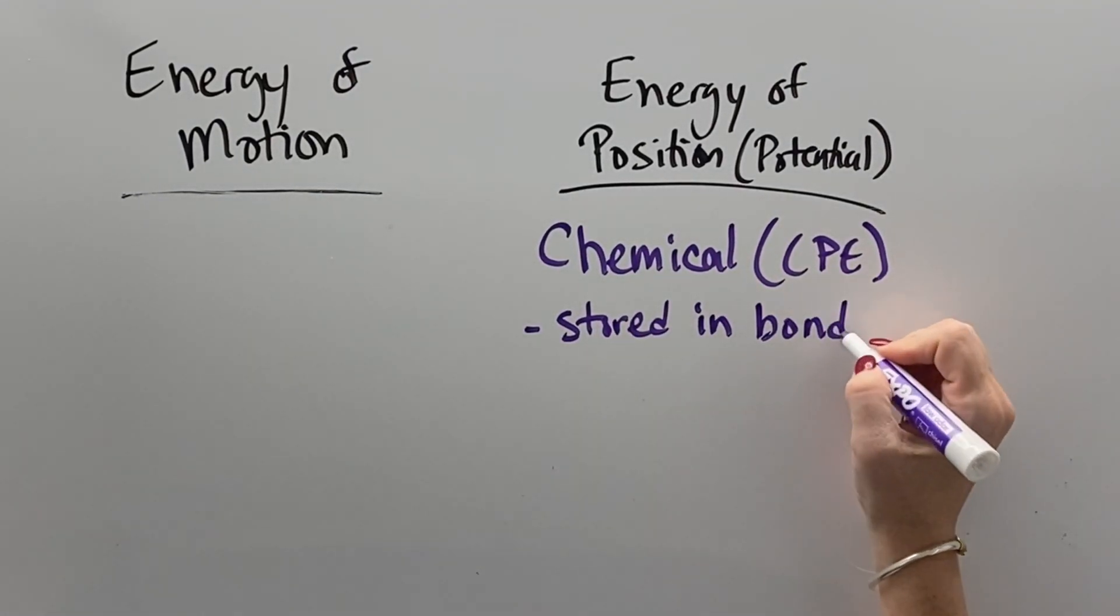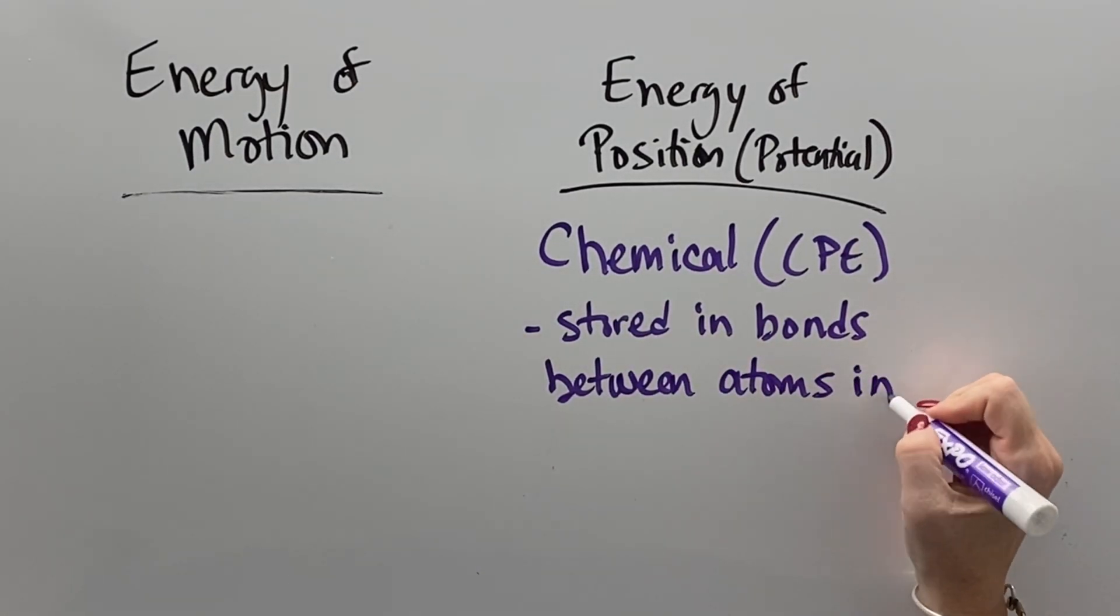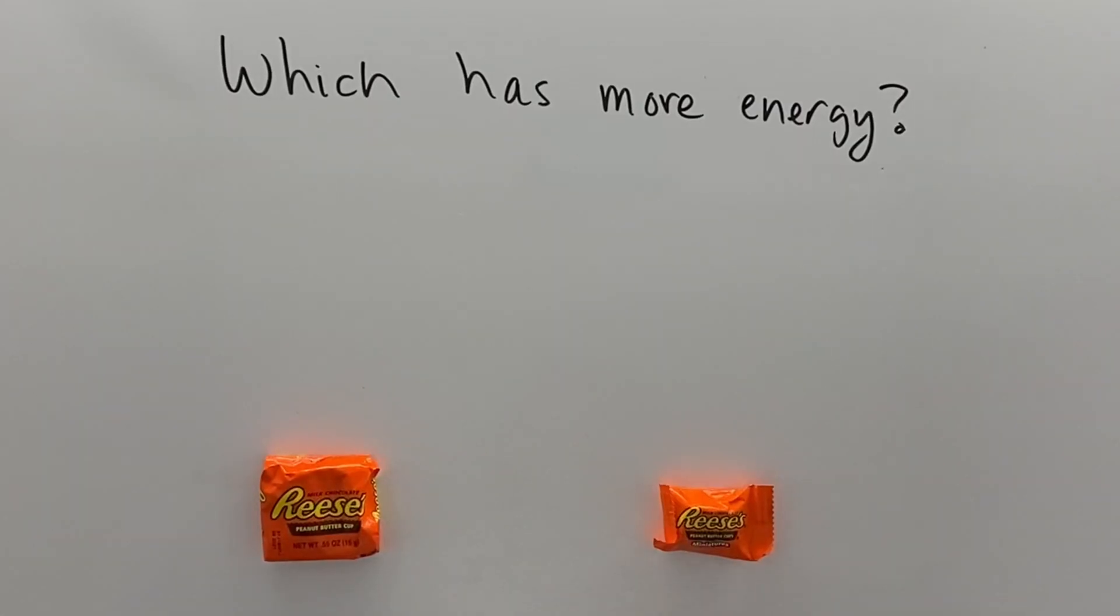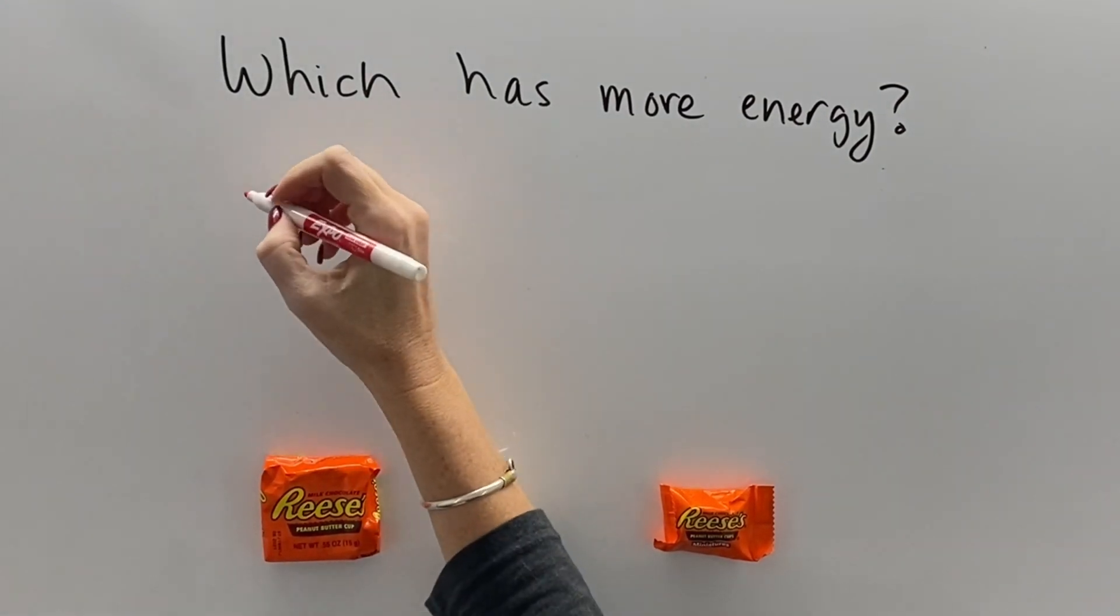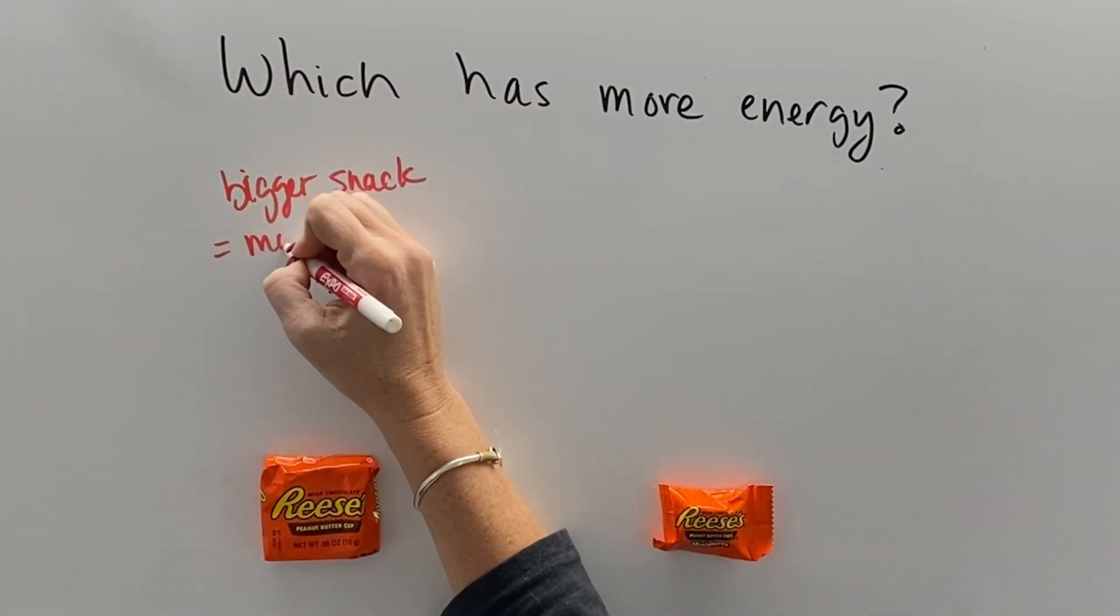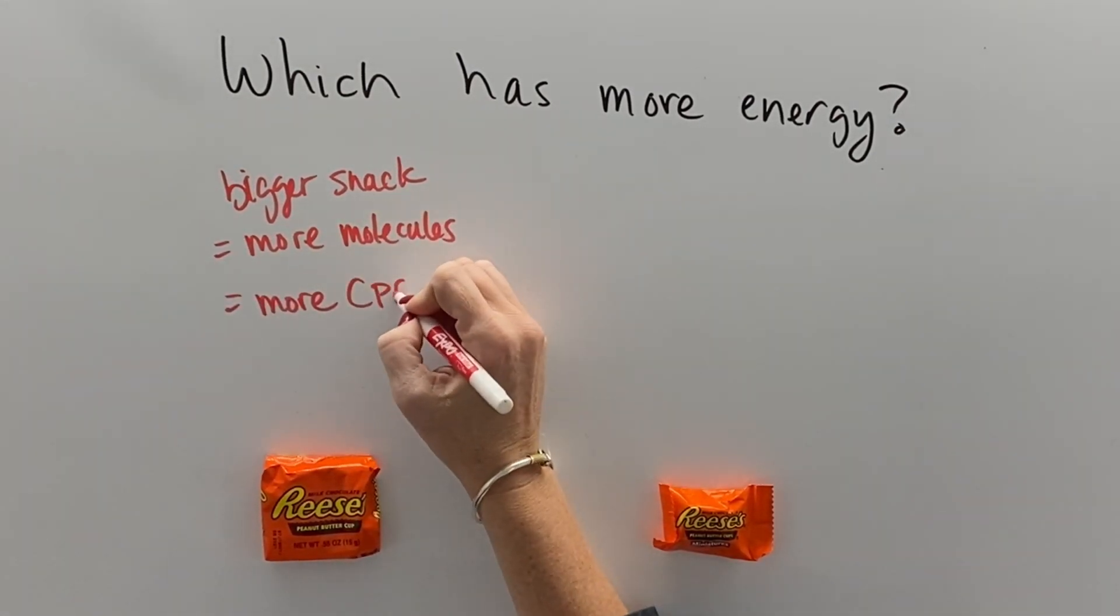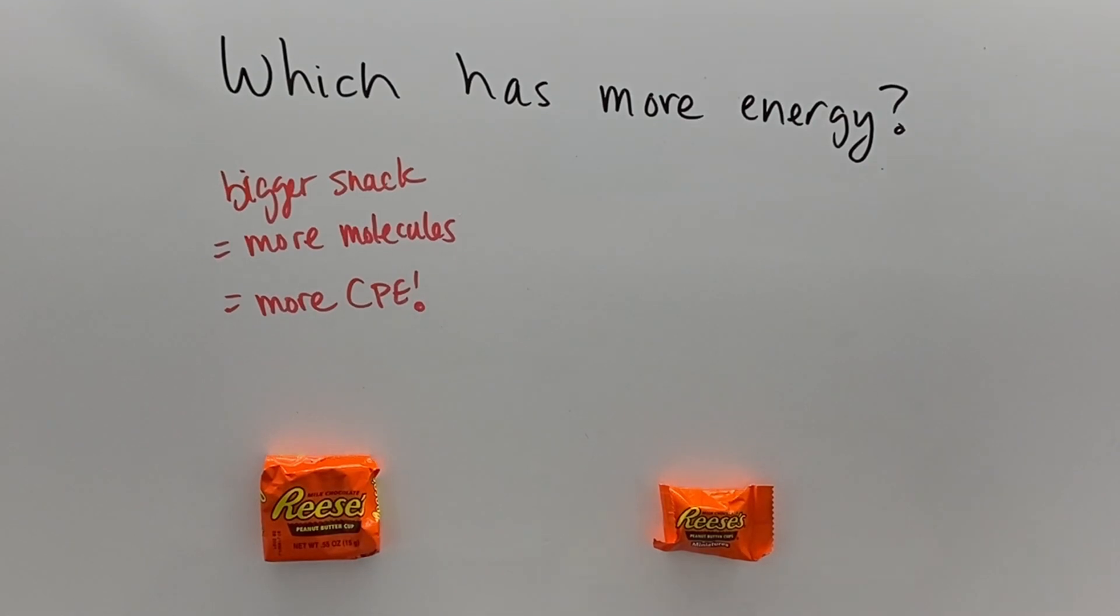Chemical potential energy is stored just in the fact that molecules have bonds that can be broken, and when you break the bonds between atoms in molecules, then they release energy. And so a large concentration of chemical energy, like a bigger snack, would have more molecules to have bonds that can be broken, therefore more chemical potential energy is stored.